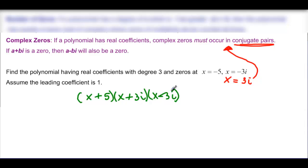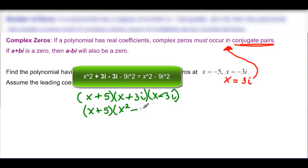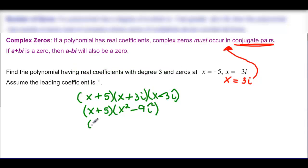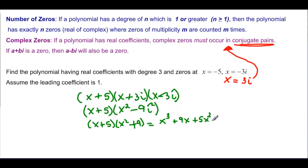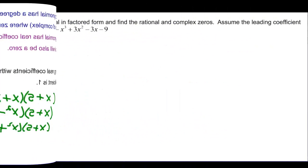Leaving (x + 5) as is, multiply (x + 3i)(x - 3i): the middle terms cancel and we get x² - 9i². Since i² = -1, this becomes x² + 9. Now multiply (x + 5)(x² + 9): x·x² = x³, x·9 = 9x, 5·x² = 5x², and 5·9 = 45. The polynomial in standard form is x³ + 5x² + 9x + 45, which is indeed degree 3 as required.